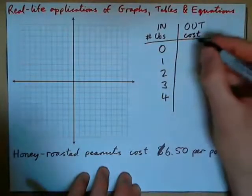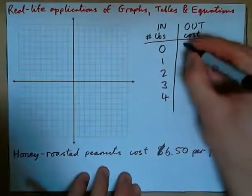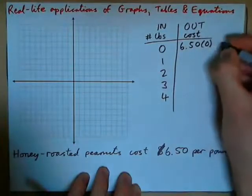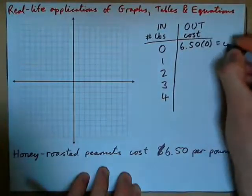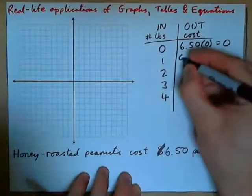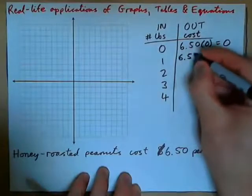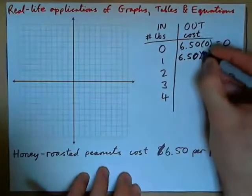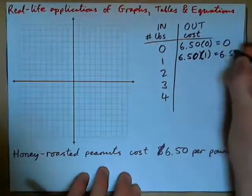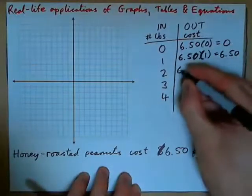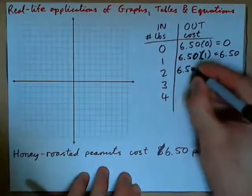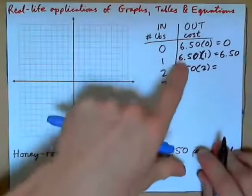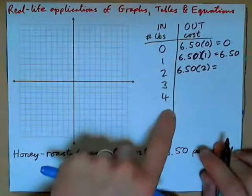If we buy 0 pounds, the cost will be $6.50 times 0 — nothing. Buy 1 pound, it will be $6.50 times 1, so $6.50. By 2 pounds, $6.50 times 2. Go ahead and fill out the rest of the table.